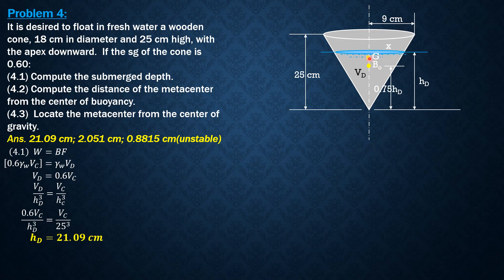G, the center of gravity, is also 0.75 or three-fourths of H sub C, which is 25 cm. Let's assume that the metacenter is above G, and let's assume also that this cone can float in this upright position with apex downward.